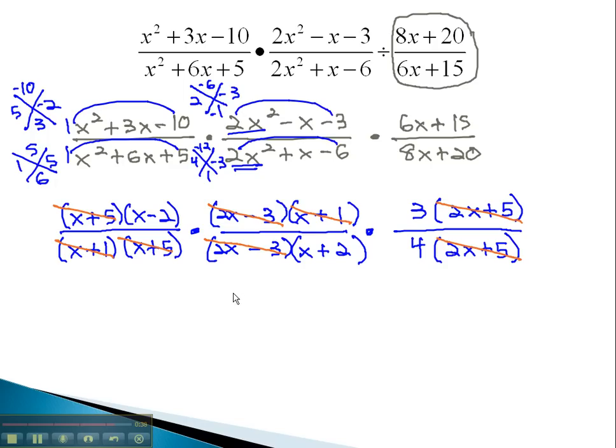This leaves us with just 3 times x minus 2 in the numerator, over 4 times x plus 2 in the denominator. We can't do any more reducing, because we have no more matching factors. By multiplying by the reciprocal and factoring everything, we can divide out our common factors. In part 2 of this video, we will take a look at solving another similar example.